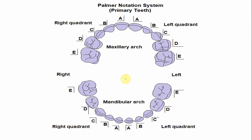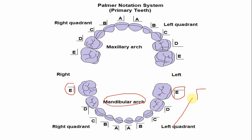In the Palmer notation system, the alphabets for all the maxillary and mandibular second molars are the same — the alphabet is capital E. The only difference is the symbol. This symbol indicates that the tooth is of the mandibular arch and of the left quadrant. For the right quadrant, this symbol indicates that the tooth is of the mandibular arch and of the right quadrant. So in the Palmer notation system, the alphabets are the same; the only difference is the symbol.